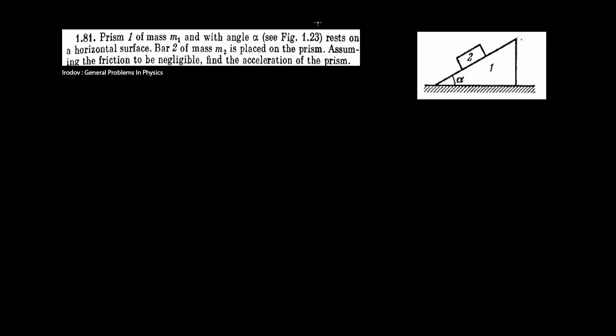Prism 1 of mass m1 and with an angle alpha — you can see this figure — rests on a horizontal surface. Bar 2 of mass m2 is placed on the prism. Assuming the friction to be negligible, find the acceleration of the prism.